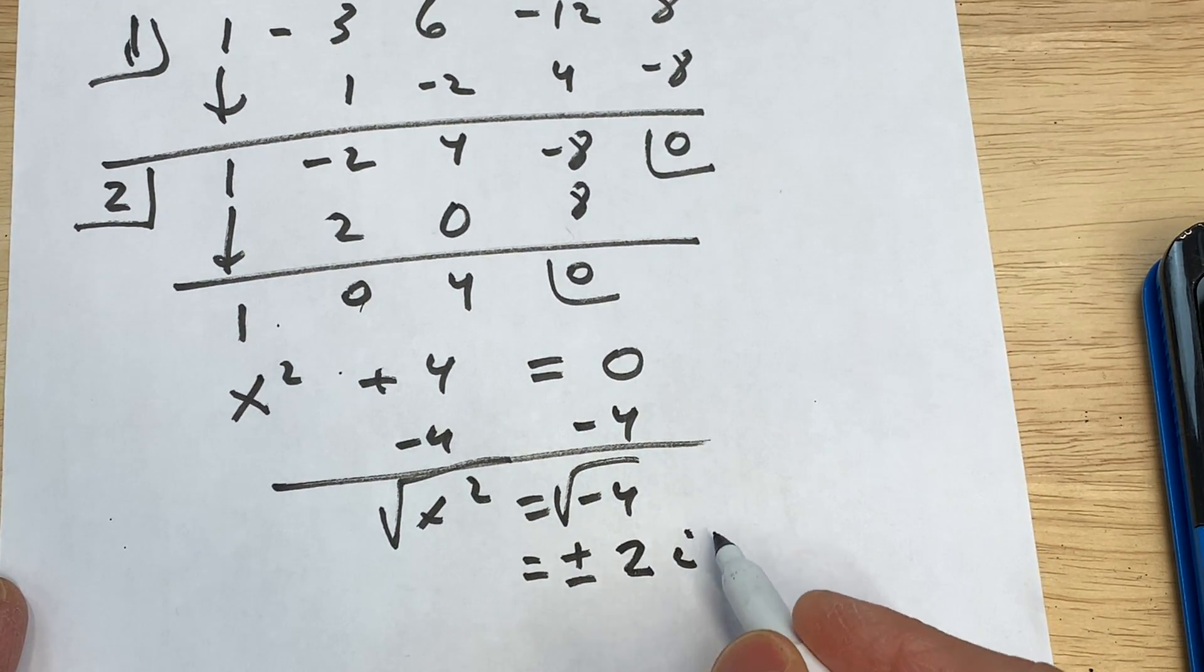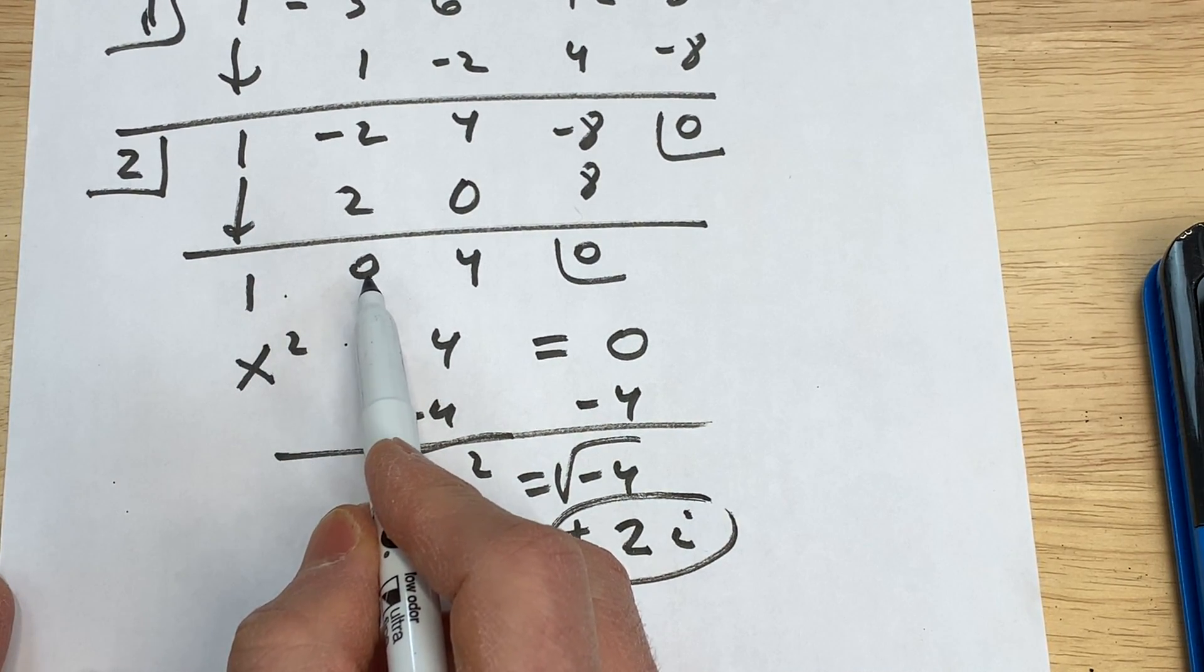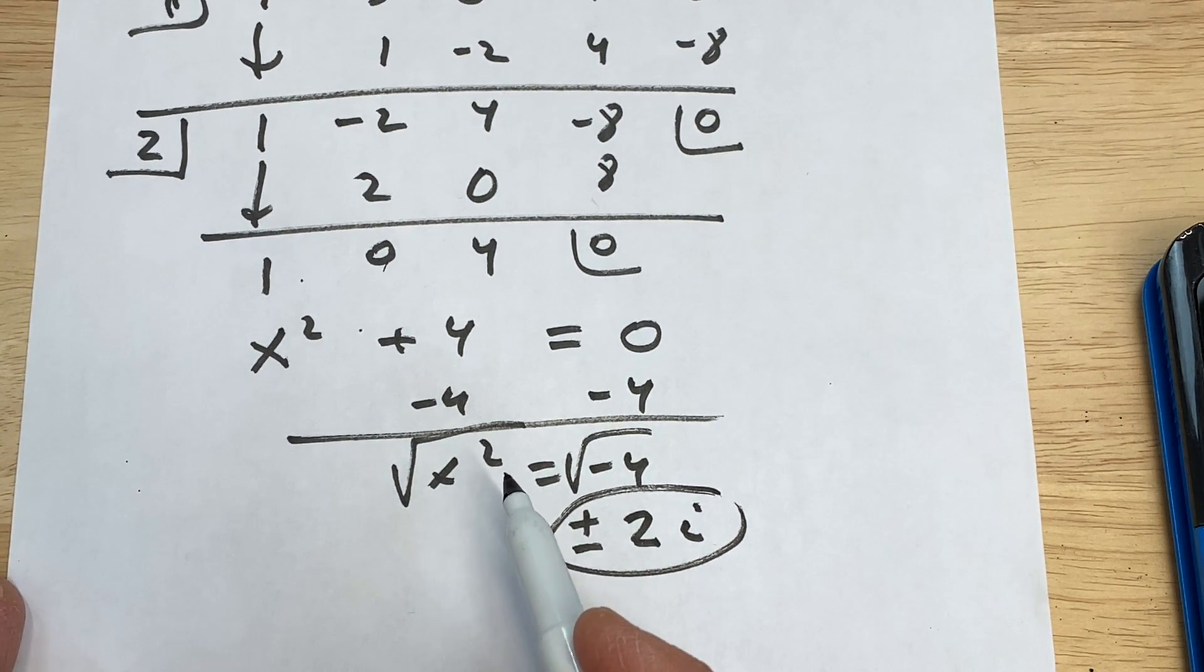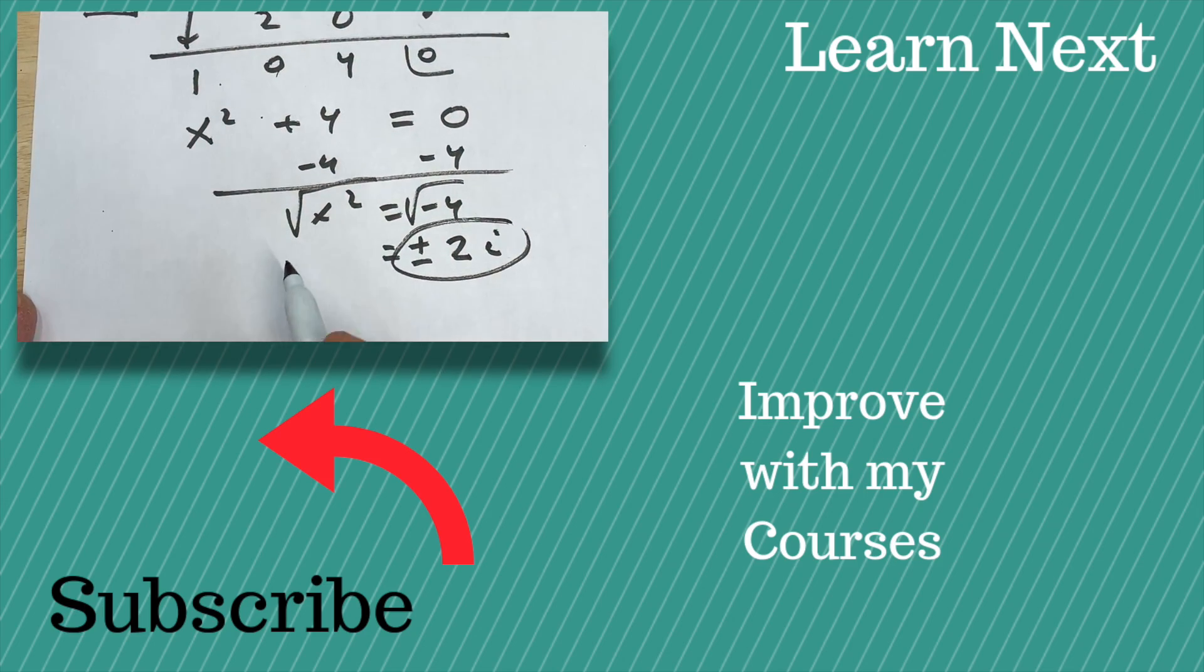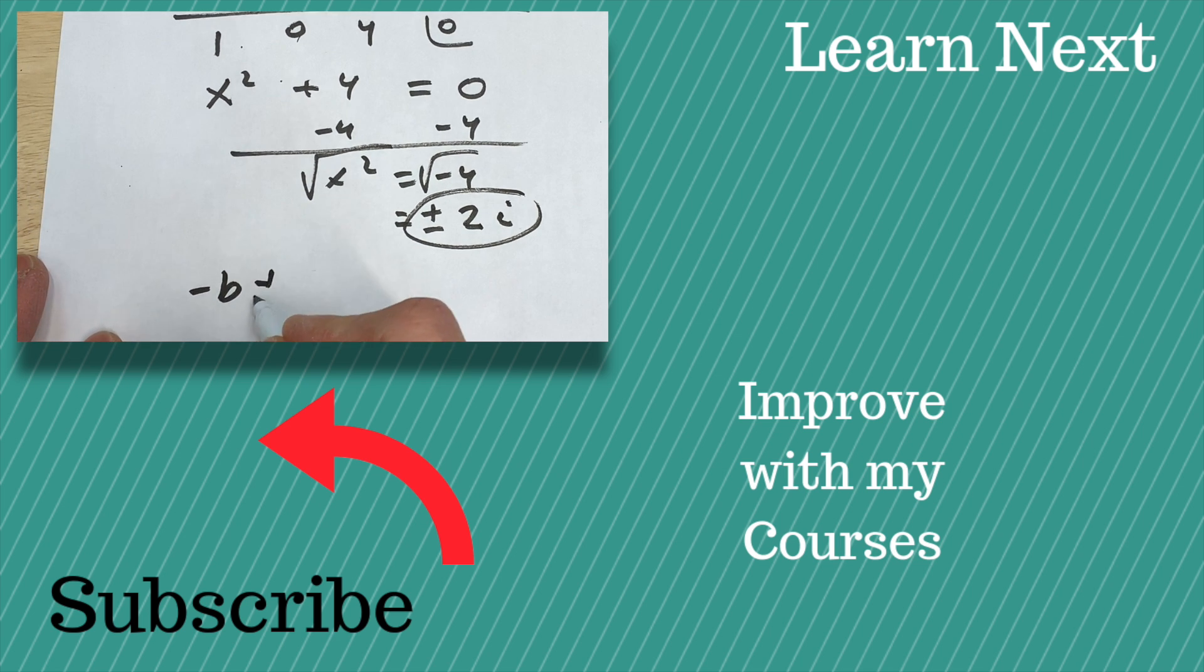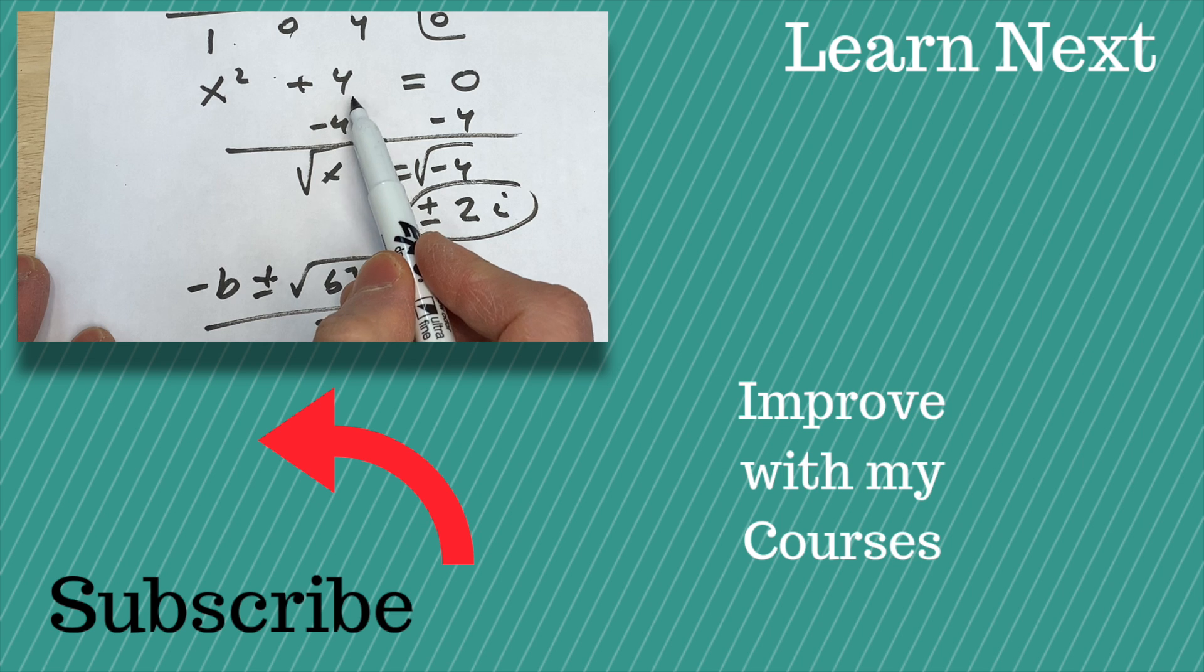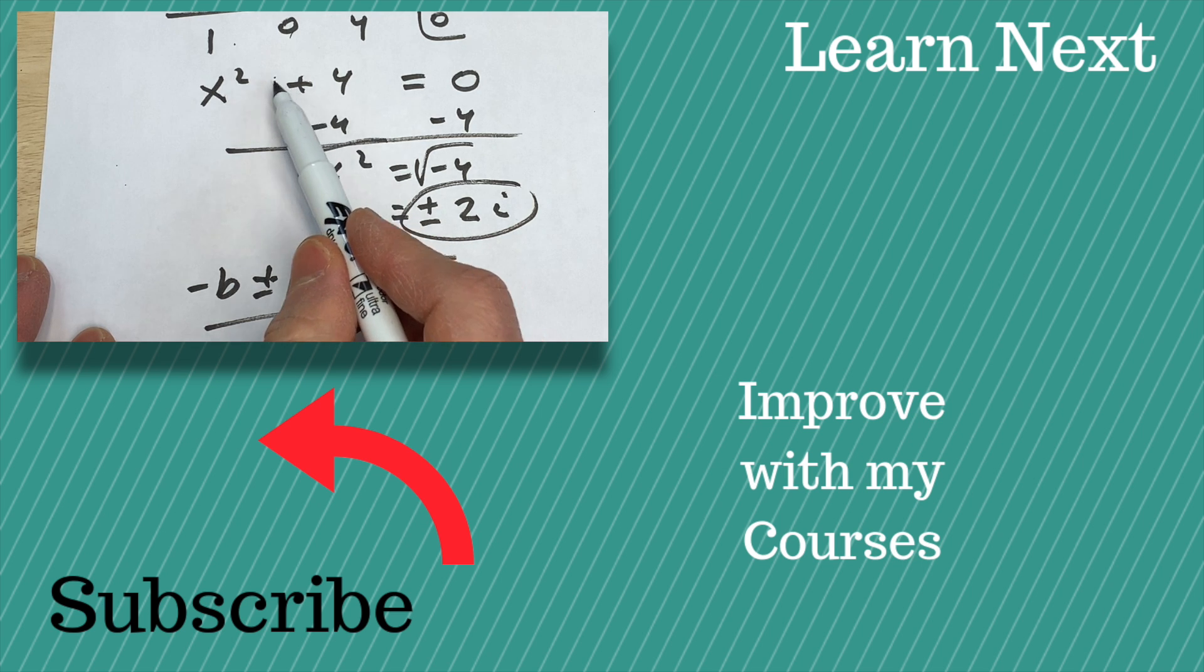So these are our remaining two zeros. Now if the middle term wasn't zero like it was here, you could still do the quadratic formula once you get it down to a quadratic. You would just do negative b plus or minus square root of b² minus 4ac all divided by 2a, and go ahead and put your a, b, and c in. In this case, a is going to be 1 and c is going to be 4, b is going to be 0 since we didn't have that middle term.